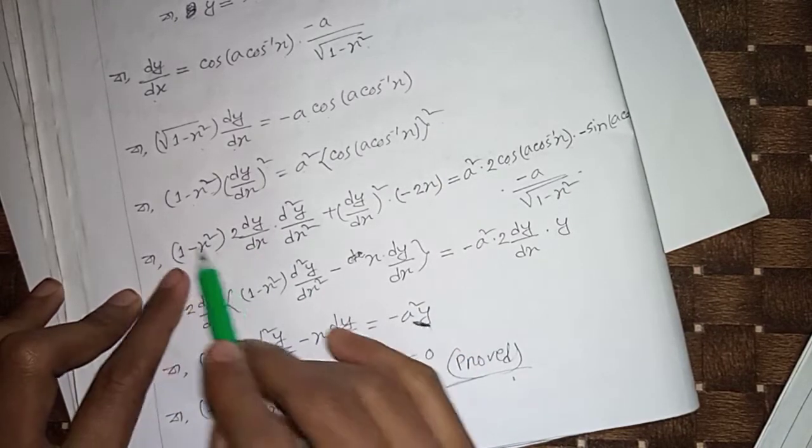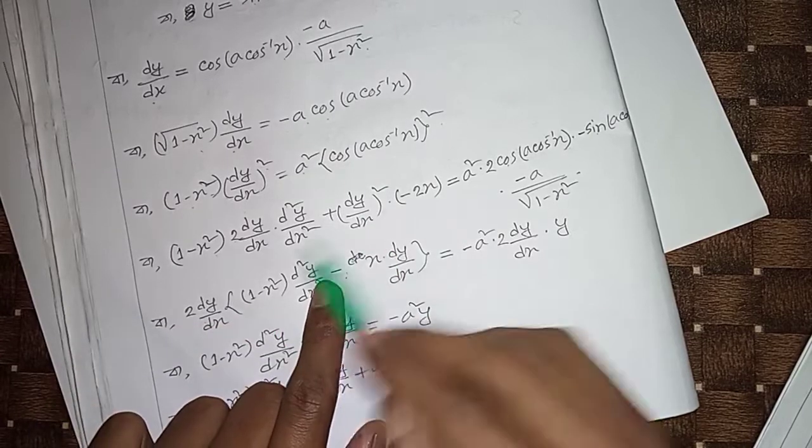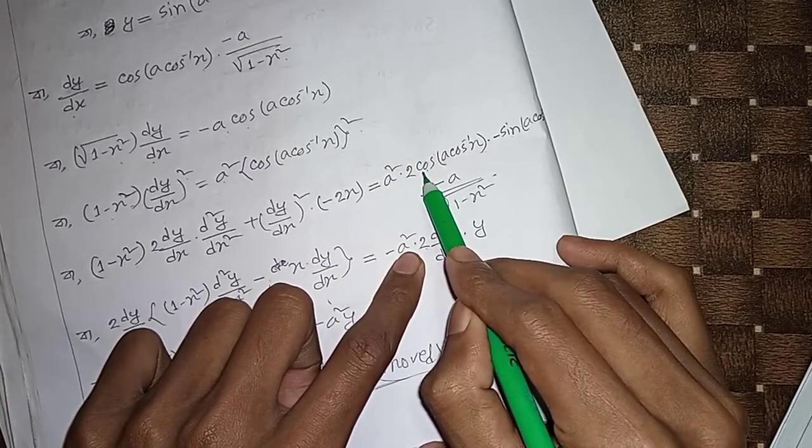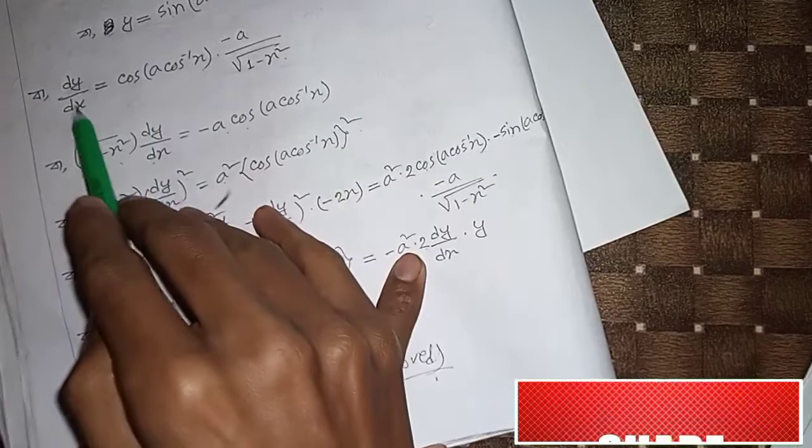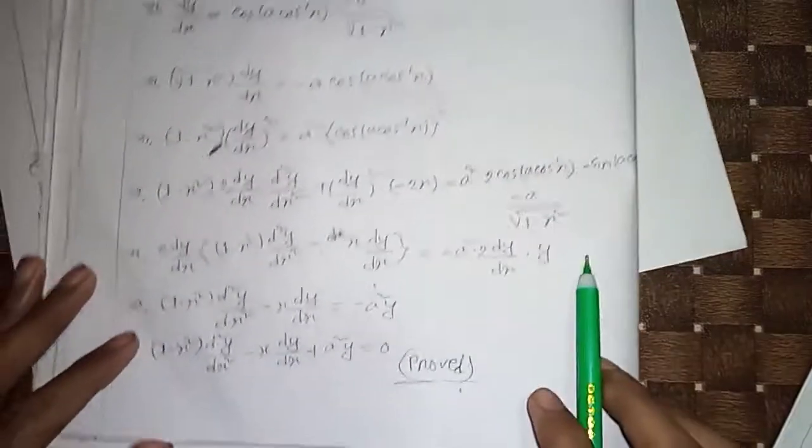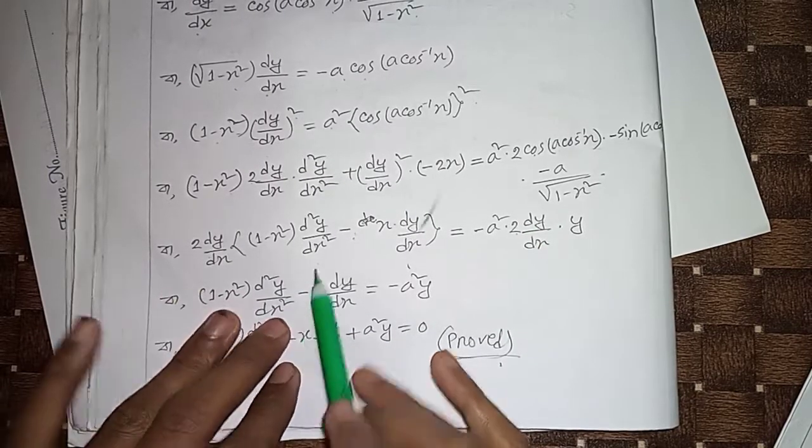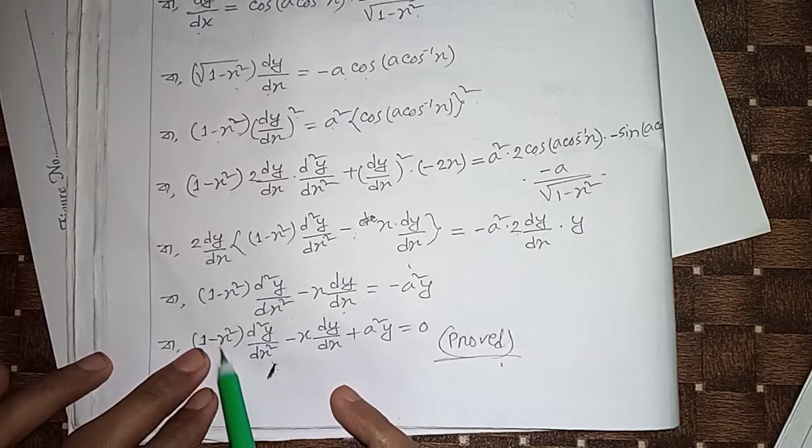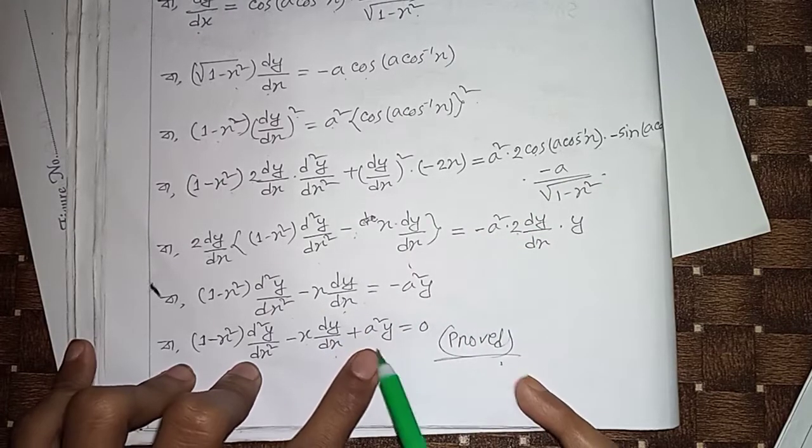Simplifying: (1-x²) times d²y/dx² minus x dy/dx equals zero. This becomes (1-x²) d²y/dx² minus x dy/dx plus a²y equals zero, which verifies our differential equation.